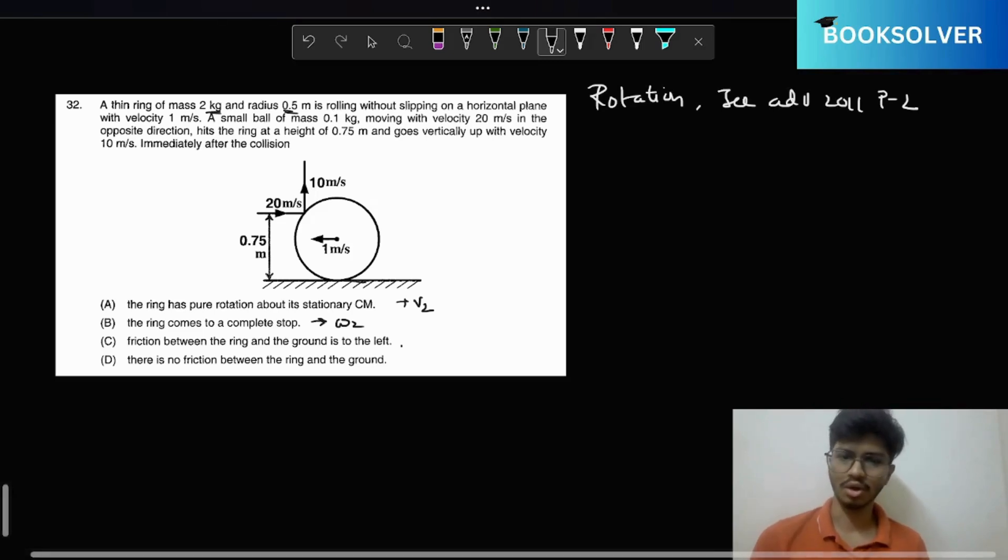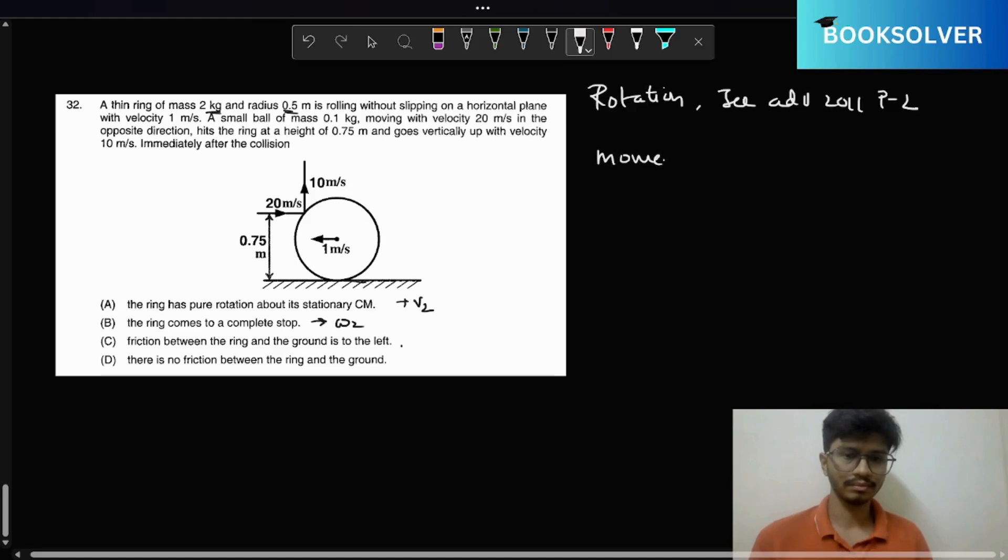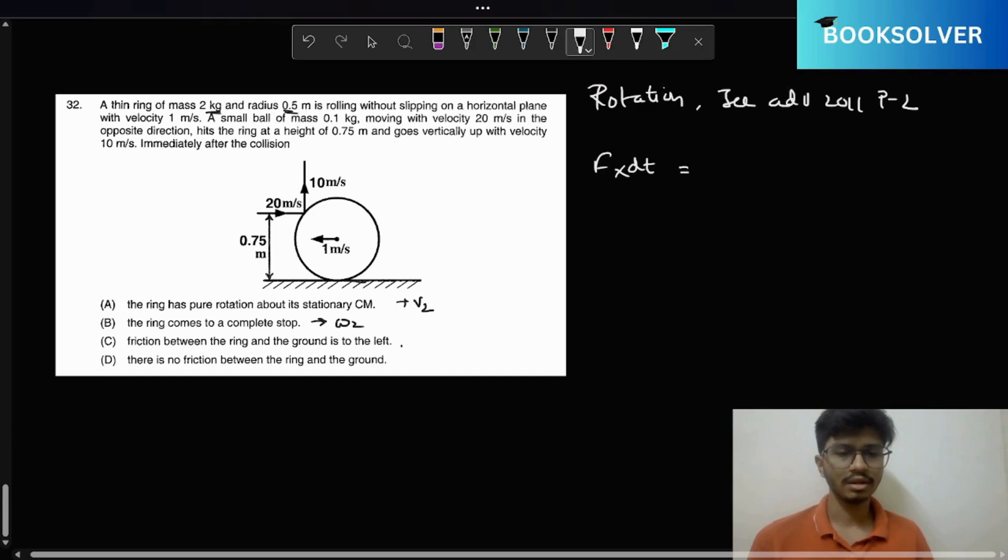I'm assuming all of these are after collision. We have basically, we can say that we can conserve momentum. Now let's do this: Fx dt, that is the change in momentum in the x direction. We cannot conserve momentum. Fx dt in the x direction is basically 0.01 into 20.